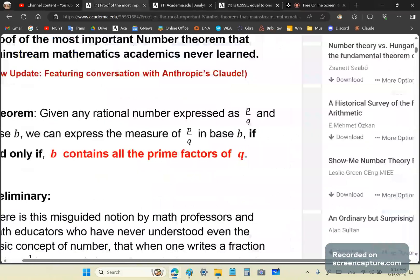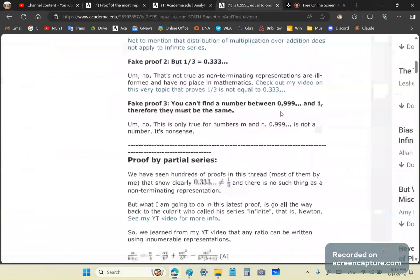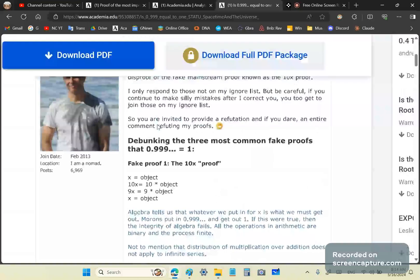Proof of the most important number theorem that mainstream mathematics academics never learned. So, read it carefully. Study it. You need to study it. And the last one is, you can't find the number. This is so absurd. You can't find the number between 0.999... Well, first of all, therefore, there must be the same. Well, first of all, this is not a number. And this, the idea that you can find the number between two numbers means there must both be numbers. 0.999... is not a number. It's shorthand for a series. You moron. It's shorthand for a series. That and nothing else.